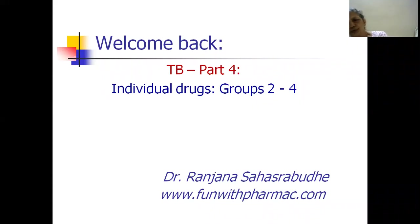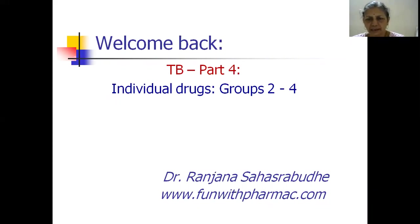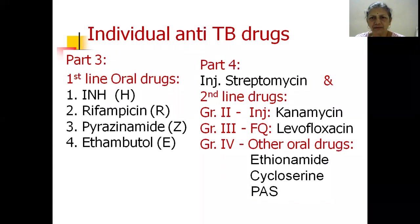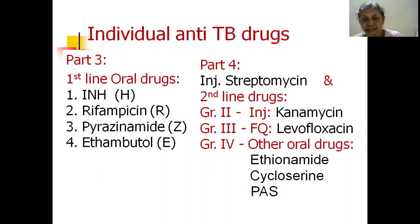Hello and welcome to tuberculosis part 4. So far we have seen the current guidelines, the treatment regimens for different types of patients, and in part 3 we saw in detail the first-line oral drugs used in management of tuberculosis. In part 4, we will go on to see the injectable first-line drug streptomycin, and from the 2nd, 3rd, and 4th groups — the second-line drugs — we will talk about the drugs actually being used in the RNTCP regimens.